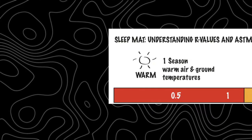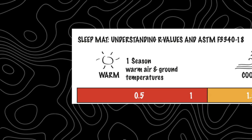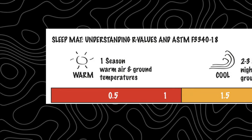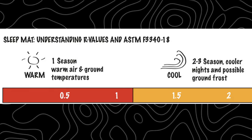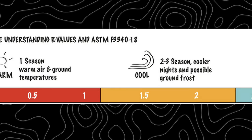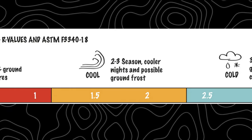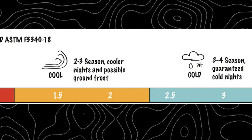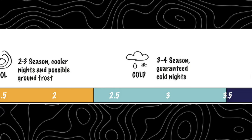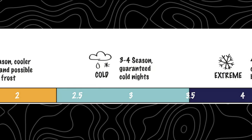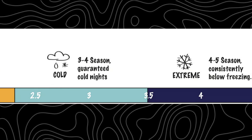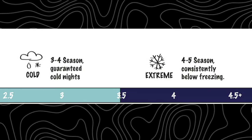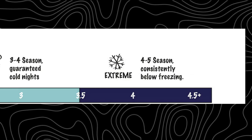So how do you choose the proper sleeping pad based on R-value? Starting from 0 to 1 are one-season pads designed for warm air and ground temperatures. From 1.5 to 2 are designed for two seasons with cooler nights and possible ground frost. From 2.5 to 3.5 are designed for three seasons with guaranteed cold nights. And from 3.5 to 5 or even higher are designed for four seasons with temperatures constantly below freezing.